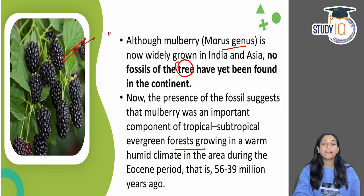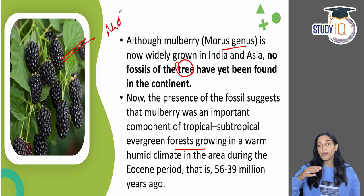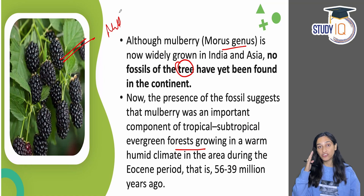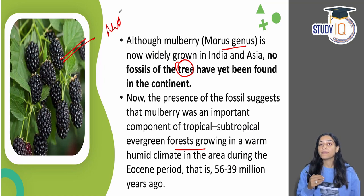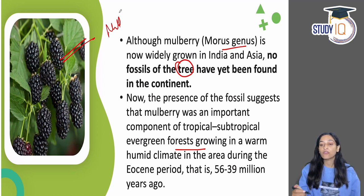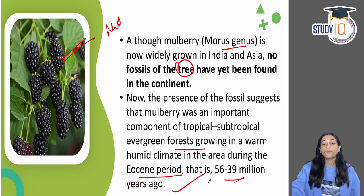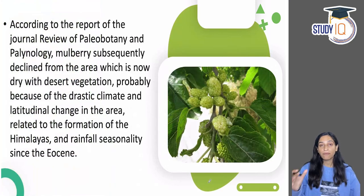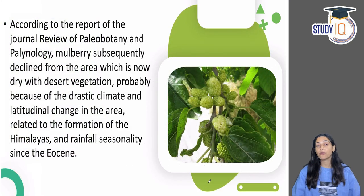If you look at the geological time periods — millions of years ago — we have divided them into many periods: Pleistocene, Eocene, and many others. This fossil belongs to the Eocene period, meaning approximately 56 to 39 million years ago. We can estimate what kind of climate it must have grown in during that time.